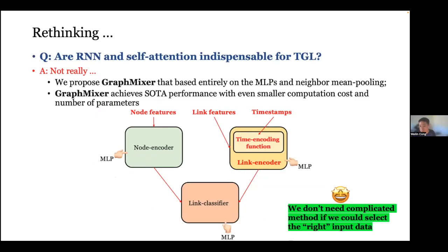In this paper, we aim to answer: are self-attention mechanisms always indispensable for temporal graph learning? Our findings indicate they are not. To support our conclusions, we propose a very simple neural architecture called GraphMixer, based entirely on MLP and only one-hop neighbor mean pooling. In practice, GraphMixer can achieve state-of-the-art performance while having very low computation cost and number of parameters. The main take-home message is: we don't really need a complicated neural architecture as long as we choose the right input data. How to select the right input data requires some empirical studies or domain knowledge.